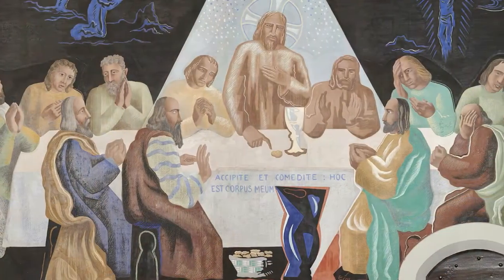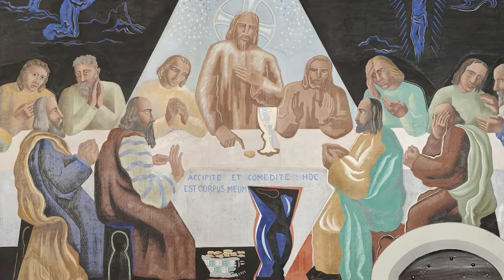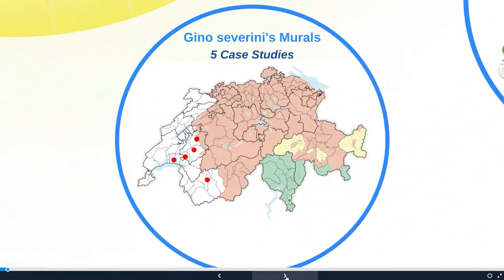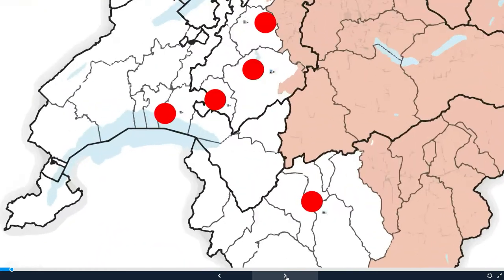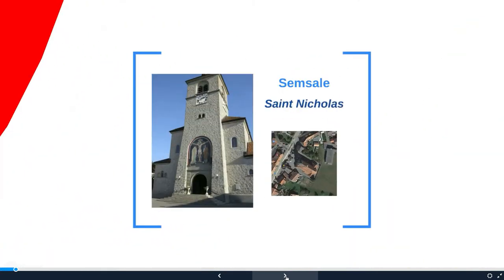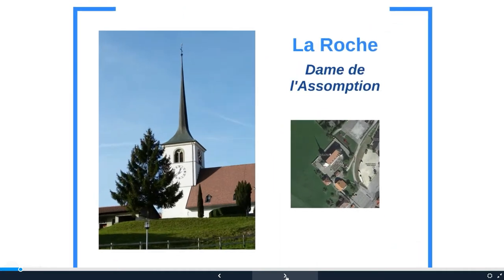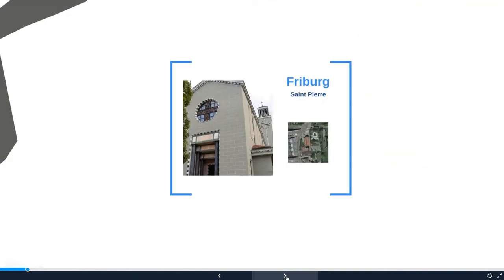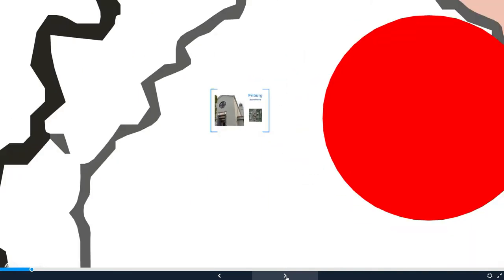The research involves many different professionals and includes the study of the executed techniques and the materials used by the artists to make the wall paintings decorating the churches of Saint-Nicolas in Semsal, Notre-Dame de l'Assomption in La Roche, Notre-Dame du Valentin in Lausanne, Saint-Pierre in Fribourg, and the Couvent de Capucion in Sion.